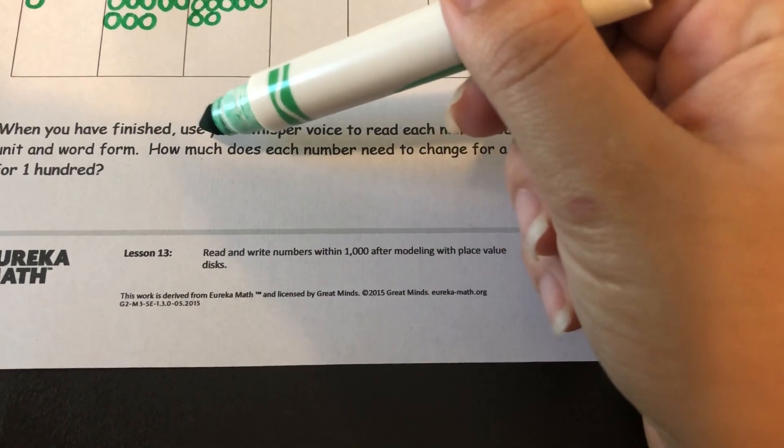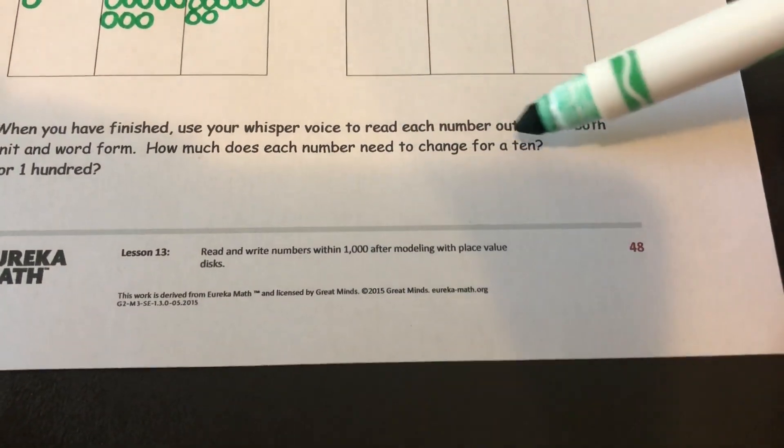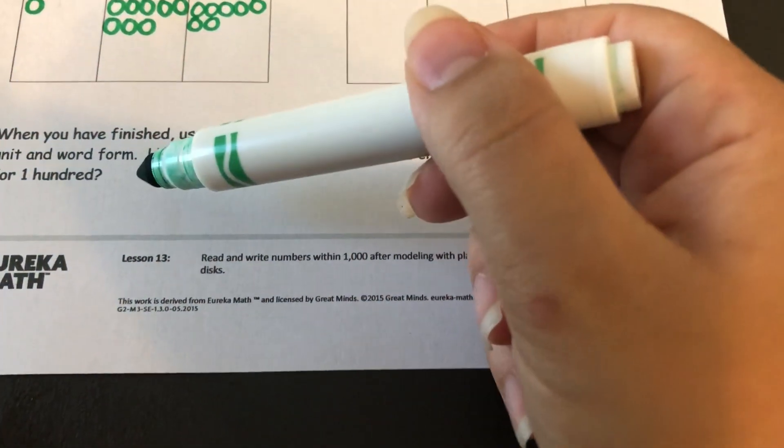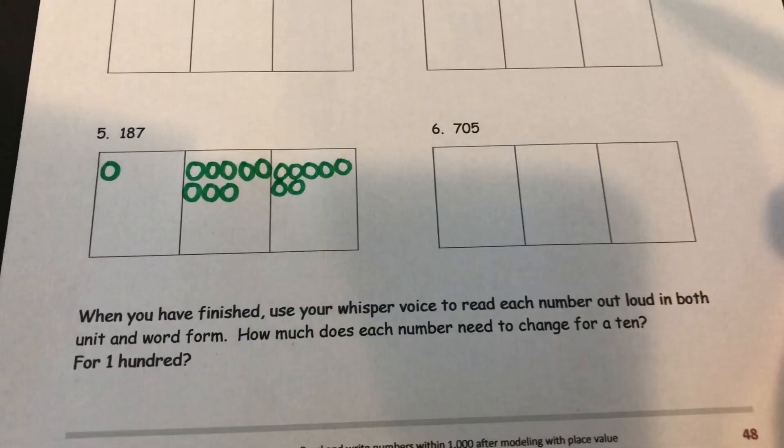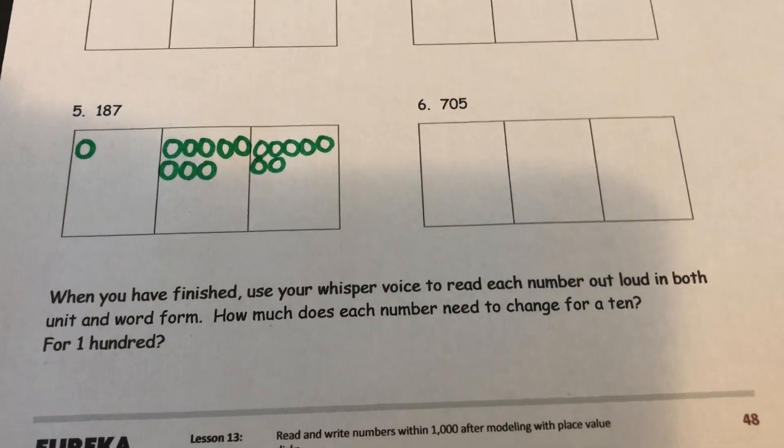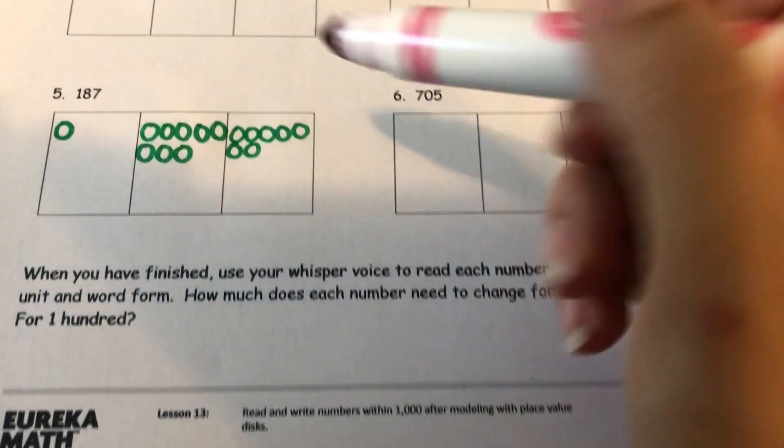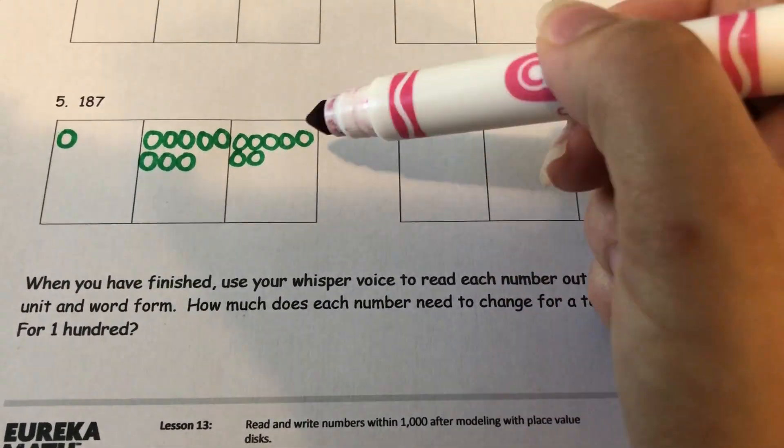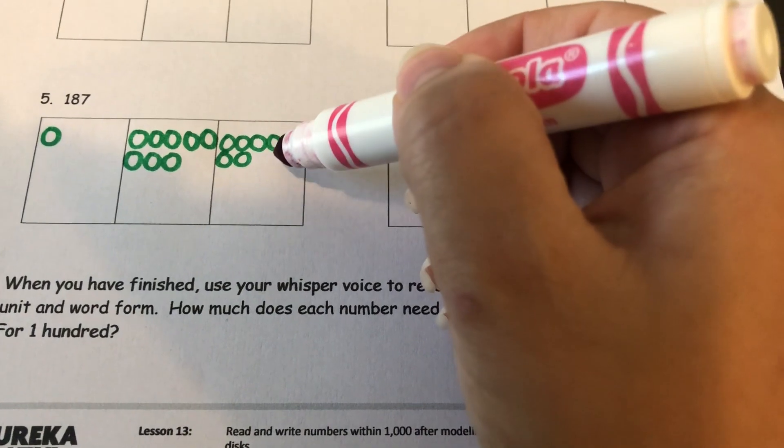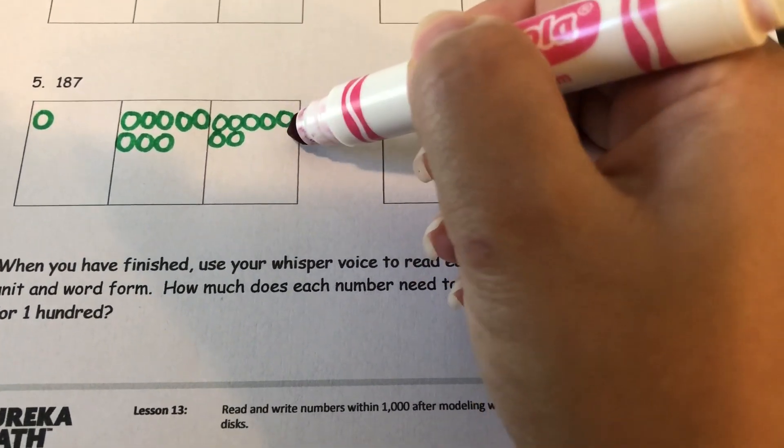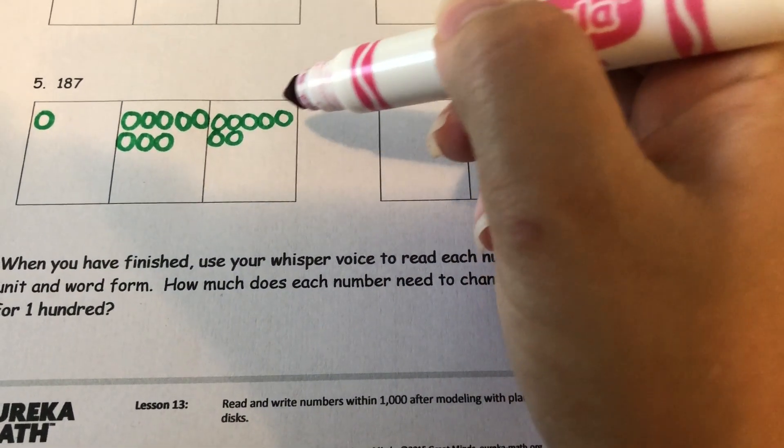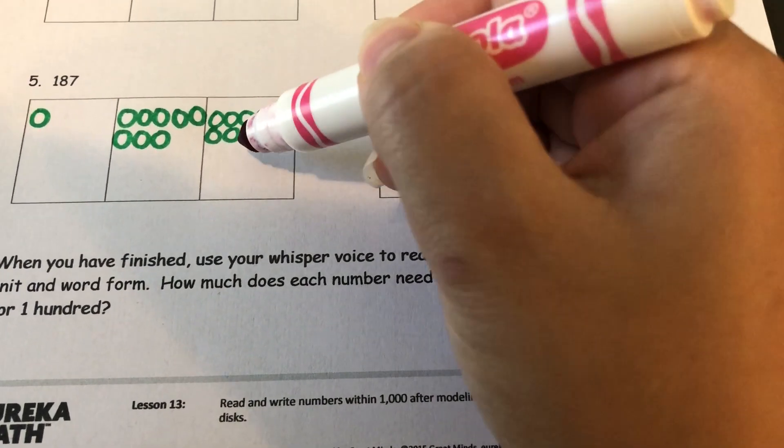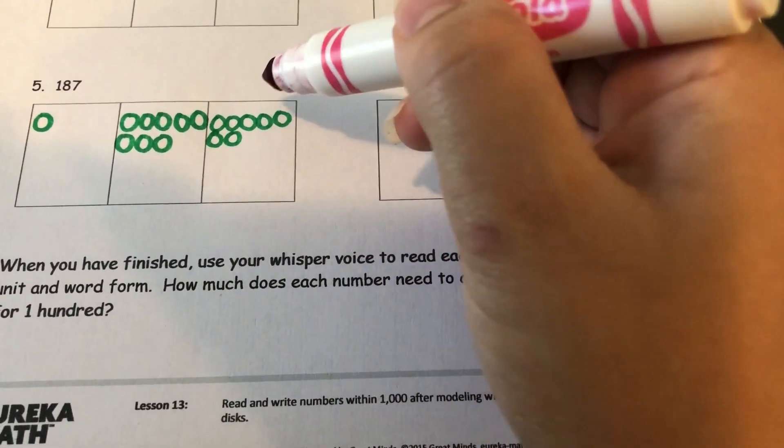And the next part says how much does each number need to change for a 10 or for a hundred? So if I wanted to add to 187 to make the next 10 I would need to add 3 ones and that would turn into another 10 because 7 ones and 3 more ones would make a 10.